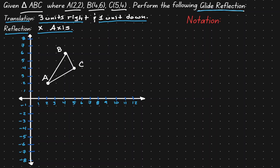Let's write this down using the correct notation. First, we start with the translation: 3 units to the right and 1 unit down, written as capital T subscript (3, -1). Then to indicate we follow with a reflection, we open a small circle, and on the left-hand side we write R x-axis. Note that in composition notation, we read from right to left — first the translation, then the reflection.